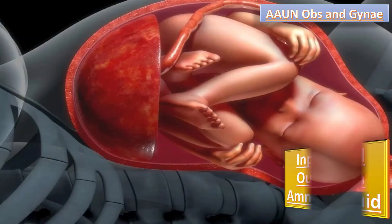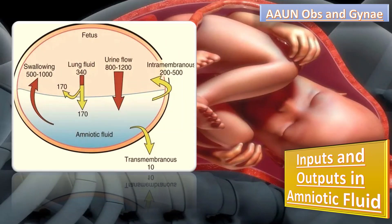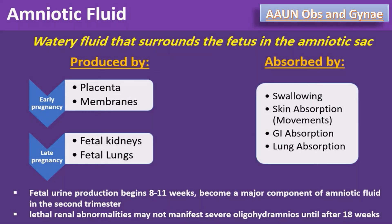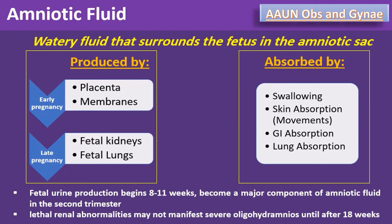What are the inputs and outputs of amniotic fluid? The input into amniotic fluid is from fetal urine and lung fluid. Output from the amniotic fluid includes fetal swallowing and intramembranous flow to the fetus. Amniotic fluid is produced by the placenta, membranes, fetal kidneys and lungs. Amniotic fluid is absorbed by swallowing and absorption by the fetal lungs, skin, and GI tract.